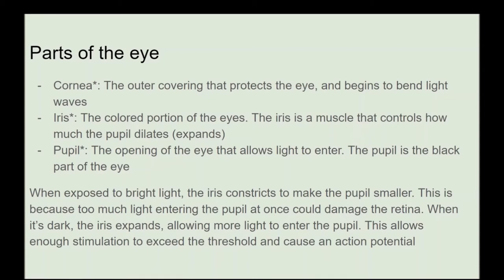This expanded pupil allows enough stimulation to exceed the threshold and cause an action potential. An example of this in action: older cameras would suddenly flash and take a picture, usually in a dimly lit environment where pupils are expanded. The flash happens and the pupil doesn't have time to constrict, so the resulting red eye is actually a picture of the back of your retina. Newer cameras have red eye reduction features that briefly do multiple flashes before taking the picture, giving the pupil time to constrict.